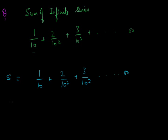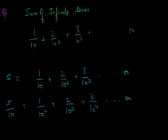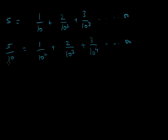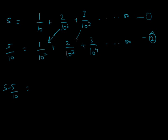Let S = 1/10 + 2/10² + 3/10³ + ... up to infinity. Divide both sides by 10: S/10 = 1/10² + 2/10³ + 3/10⁴ + ... Subtracting equation 2 from equation 1 term by term: S − S/10 = 1/10 + (2−1)/10² + (3−2)/10³ + ... = 1/10 + 1/10² + 1/10³ + ... up to infinity.